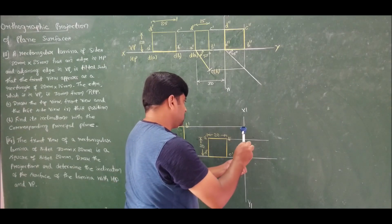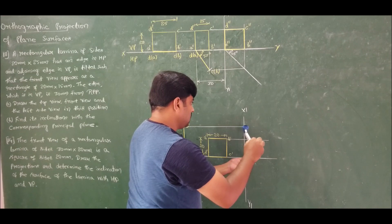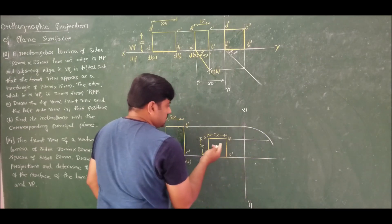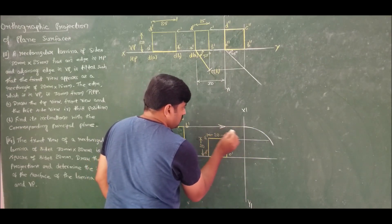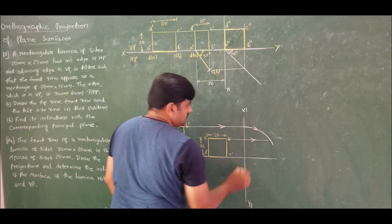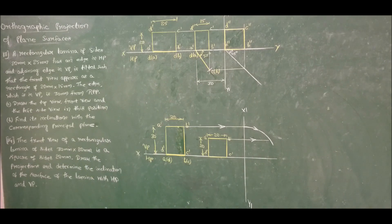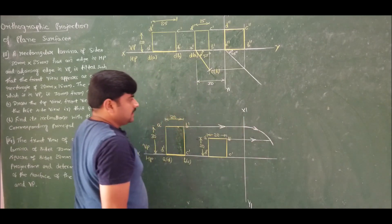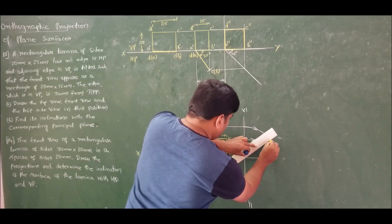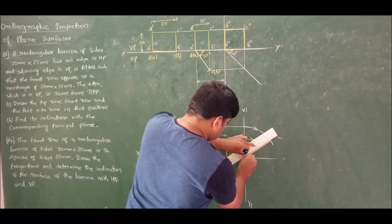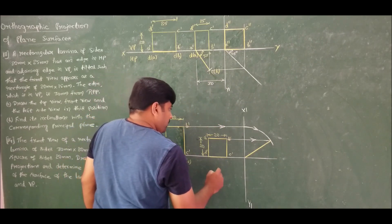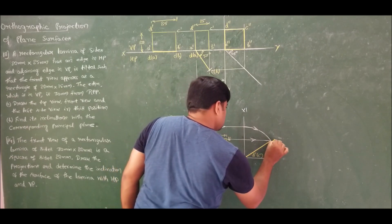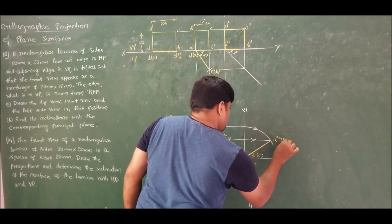Measure this height and draw an arc. You have taken a projection and rotated. These two will intersect, giving the side view and showing to what angle it is inclined. So this will be d'', c'', a'', b''.